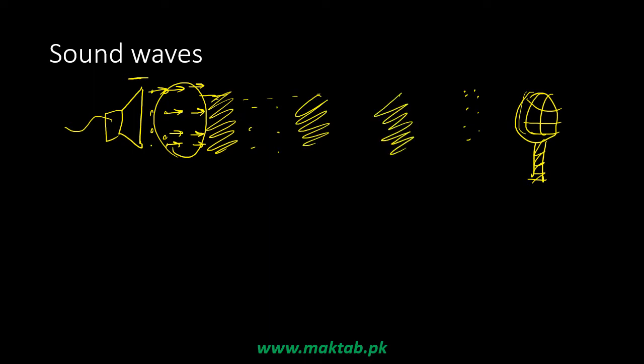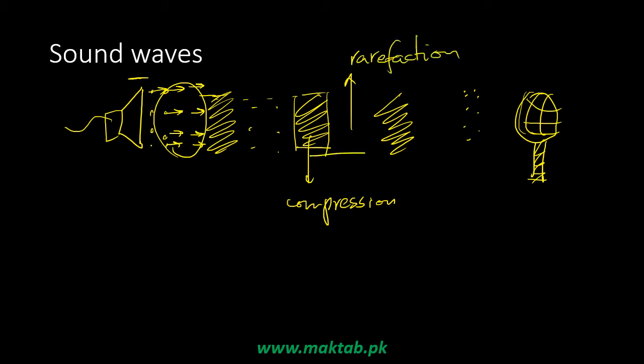When particles are compressed together, those regions are called compressions, and areas where particles are spread apart are called rarefactions. These phases of the wave are periodic. The time period of a sound wave is the time for one complete cycle, and the displacement over one wavelength defines the time period.